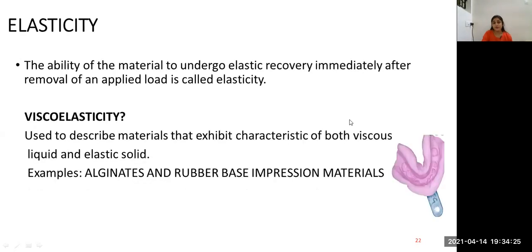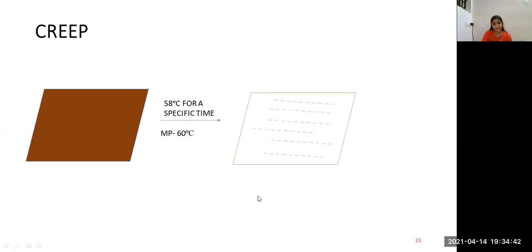The ability of a material to undergo elastic recovery immediately after the removal of an applied load is called elasticity. Viscoelasticity is used to describe materials that exhibit characteristics of both viscous liquid and elastic solid. Example: alginates and rubber-based impression materials.